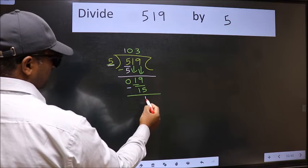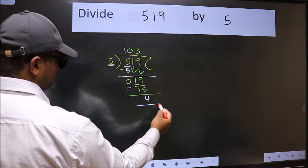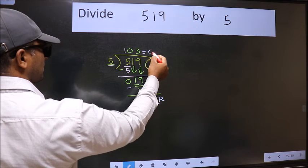We get 4. No more numbers to bring it down, so we stop here. This is our remainder and this is our quotient.